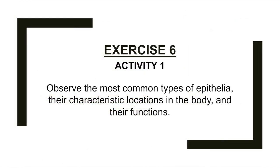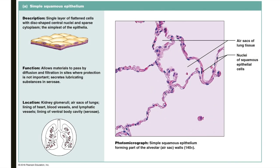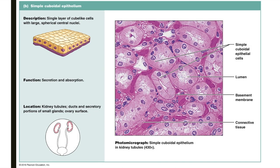In Exercise 6, Activity 1, you'll be observing the most common types of epithelia, their characteristic locations in the body, and their functions. These tissues include simple squamous epithelium, a single layer of flattened cells so thin that it allows for materials to pass via diffusion or filtration, as it does during gas exchange in the alveoli of the lungs. Simple cuboidal epithelium is a single layer of cube-like cells with large, spherical central nuclei. Its function is excretion and absorption, and can be found in kidney tubules, ovaries, and glands. The simple cuboidal cells are arranged in a circle around a central lumen, which receives the secretion produced by the cuboidal cells. Look for this characteristic when identifying simple cuboidal epithelium.